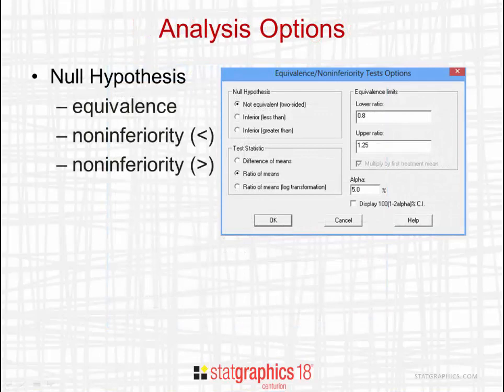On the analysis options dialog box, you need to indicate how the test should be performed. The first thing you need to specify is the null hypothesis. If you want to do an equivalence test between the test treatment and the reference treatment, you should select 'not equivalent, two-sided' as the null hypothesis. If you are trying to demonstrate non-inferiority where inferiority means that one treatment is less than the other, you select the second radio button. If you are trying to demonstrate non-inferiority where inferiority means being larger, select 'inferior, greater than.'